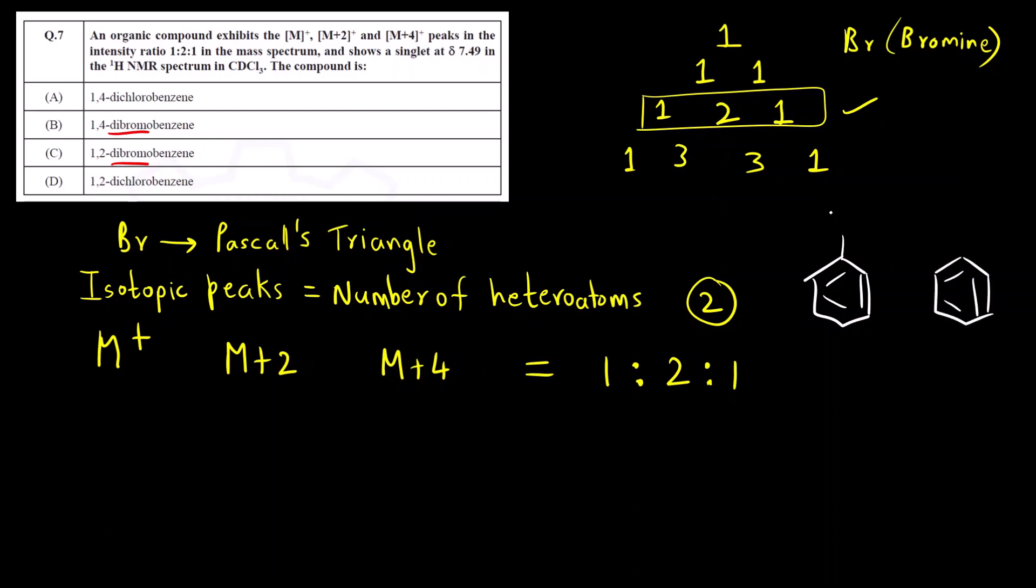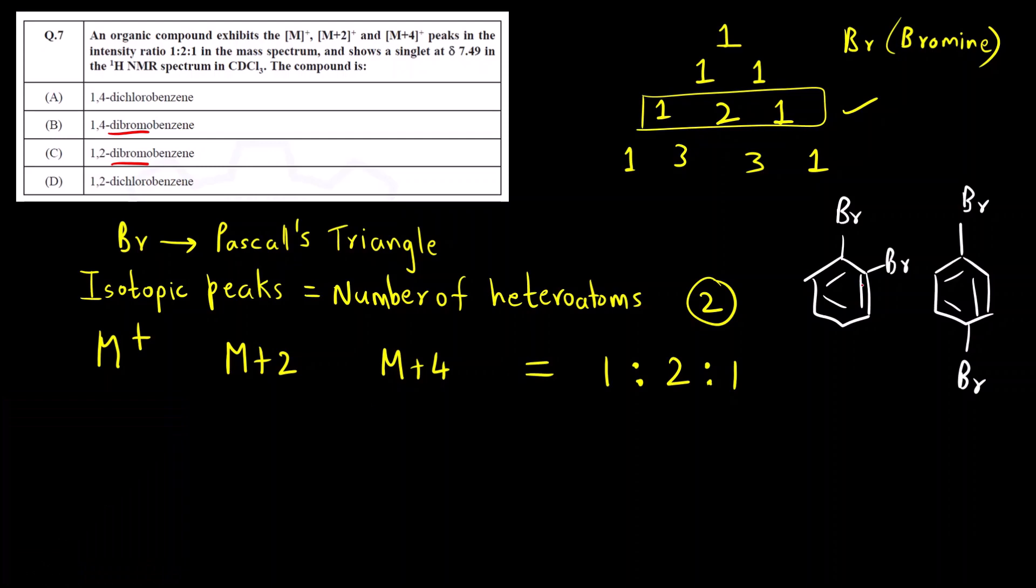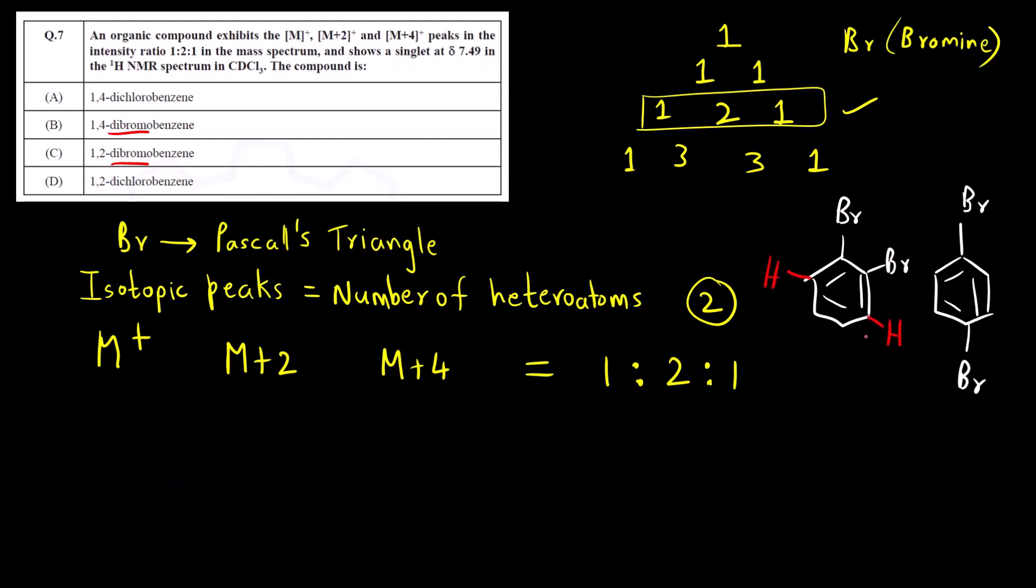This is benzene. 1,2-dibromo will be like this and 1,4-dibromo will be like this. Now here if you see in 1,2-dibromo, these two hydrogens are in same chemical environment and the other two hydrogens are in different chemical environment. For this hydrogen if you see here there is Br, here there is hydrogen, but for the yellow hydrogens, here on both the sides there is hydrogen. So that is why they both will give different signals. So here we will get two signals, two 1H NMR signals.